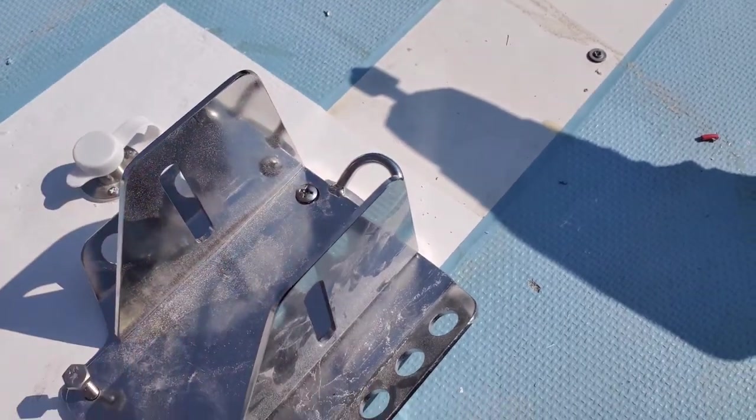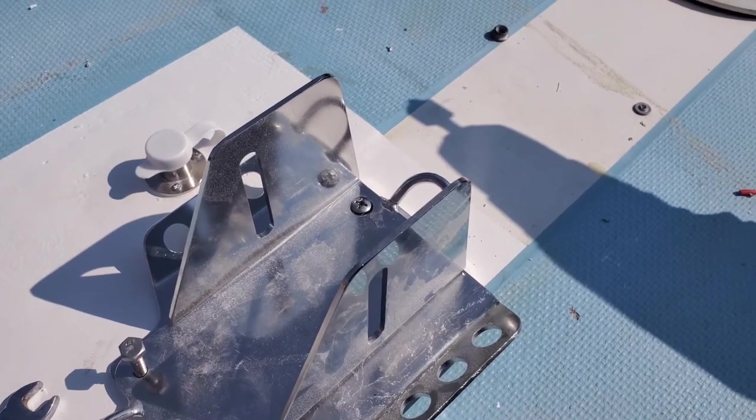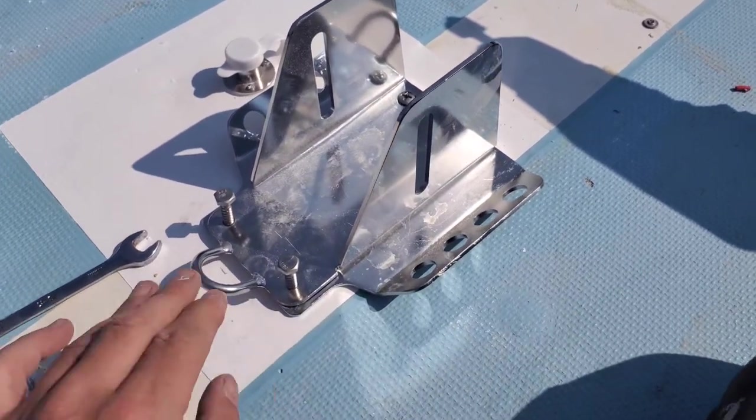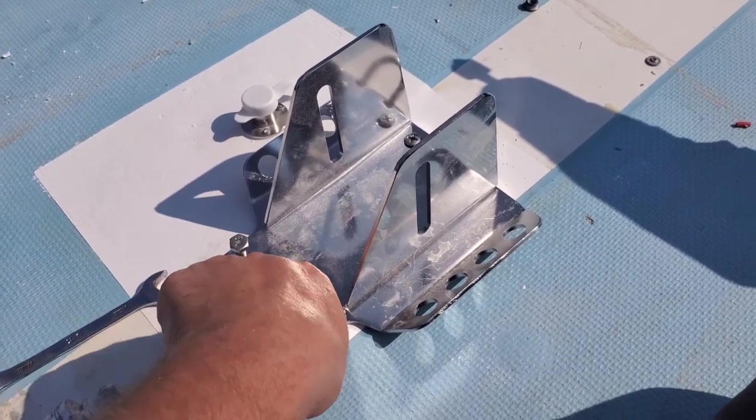So I can run a wire on the back of the bolt down to the plate on the bottom of the boat for grounding if the mast ever gets hit with lightning.